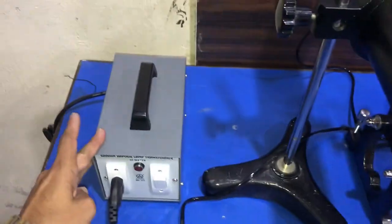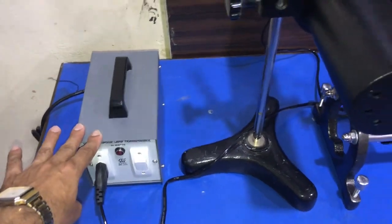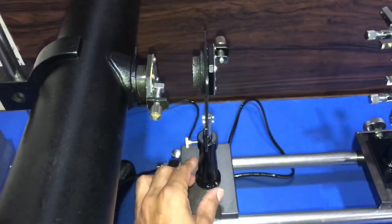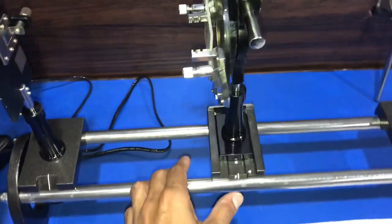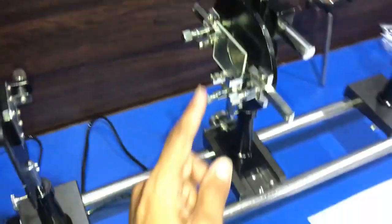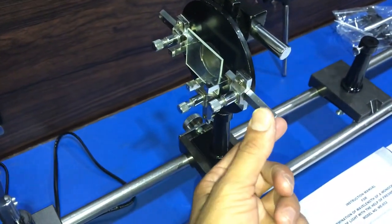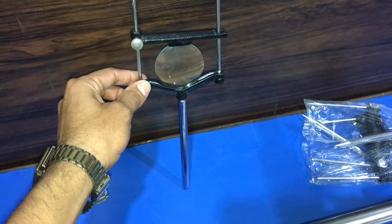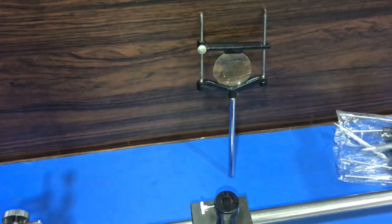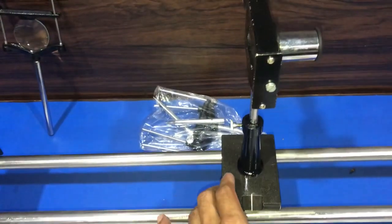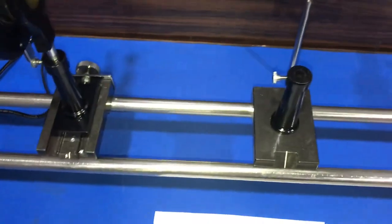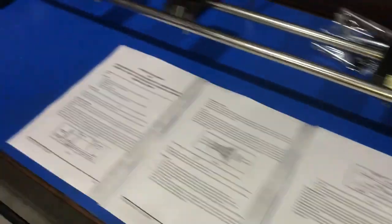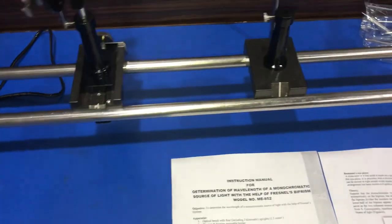This is a step-down transformer of 35 watt sodium lamp with housing and stand. This is a slit, and this is a Fresnel biprism with the prism holder. This is the convex lens of focal length 10 centimeters, and this is an eyepiece. This is the full optical bench of length 1.5 meters.